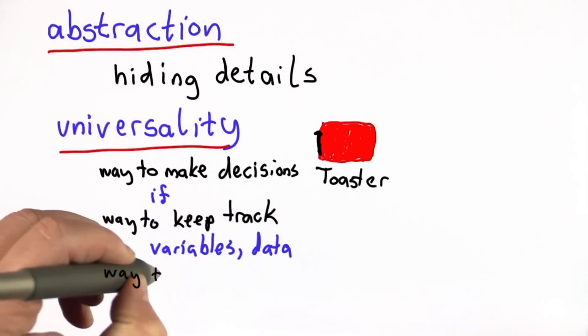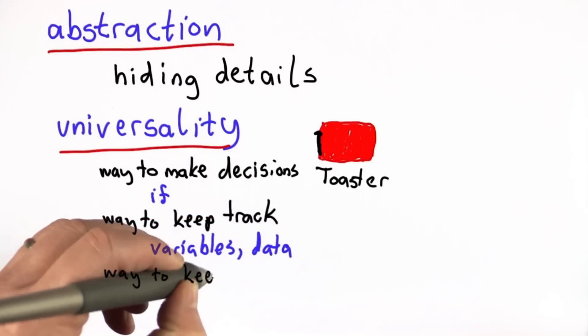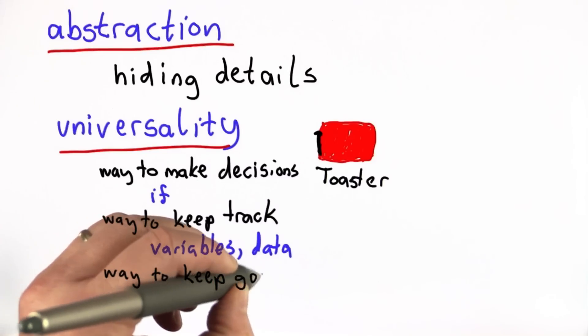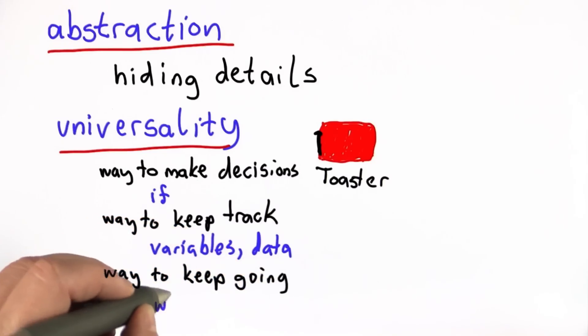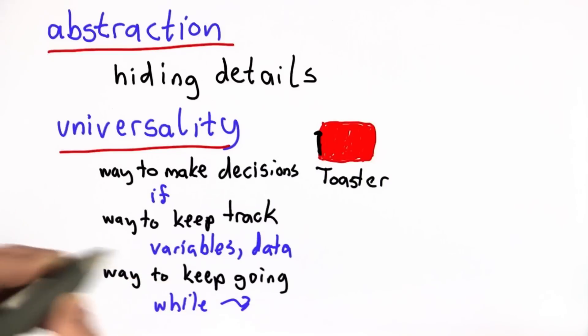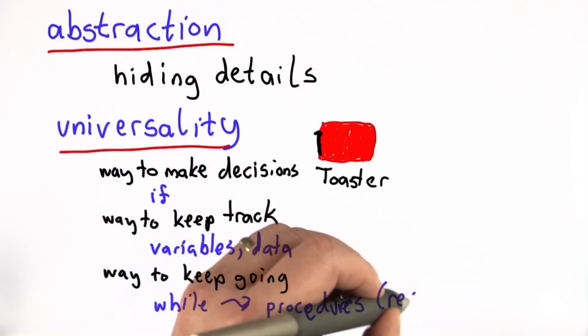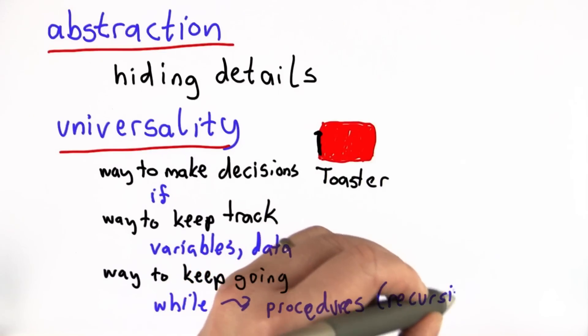And if we have a way to keep going. And we first saw that using while. With a while loop, we can make something keep going as long as we want. But in fact, we don't even need while. We could do that with procedures. And that's what we saw with recursive definitions in unit six.